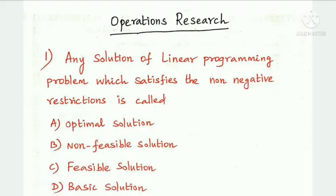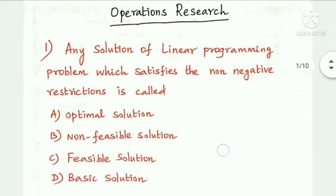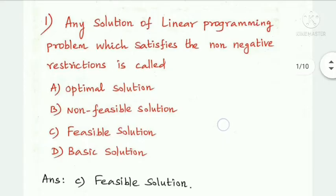First question: any solution of a linear programming problem which satisfies the non-negative restrictions is called — optimal solution, non-feasible solution, feasible solution, or basic solution. Option C is the answer: feasible solution.